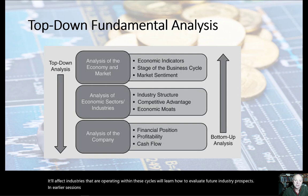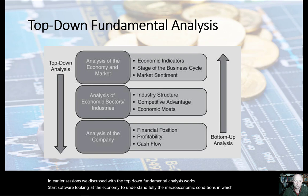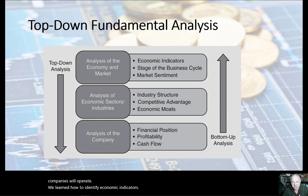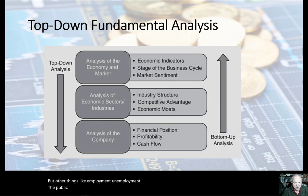In our earlier sessions we discussed the way that a top-down fundamental analysis works. It starts off by looking at the economy to understand the macroeconomic conditions in which industries and companies will operate. We learned how to identify economic indicators — changes in GDP, essentially the growth in the economy — but also things like employment, unemployment, public sector borrowing which may also constrain investment. We also talked about some of the stages in a business cycle and the way that market sentiment is identified.